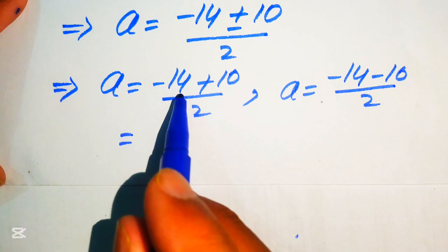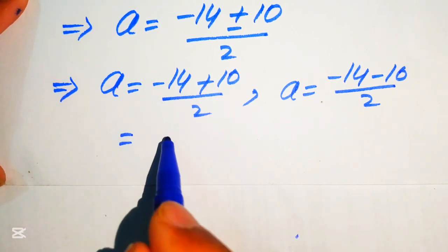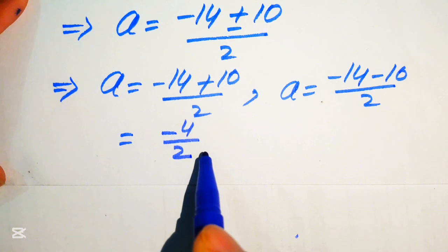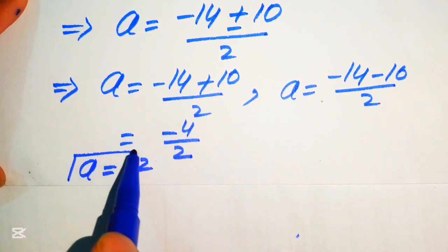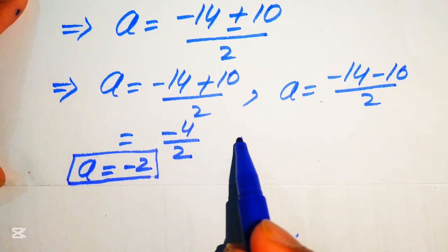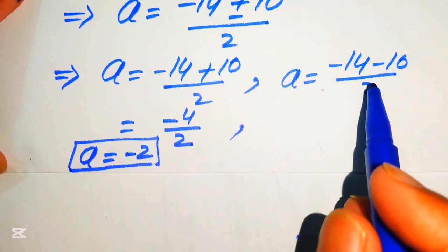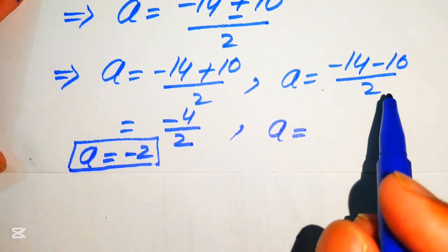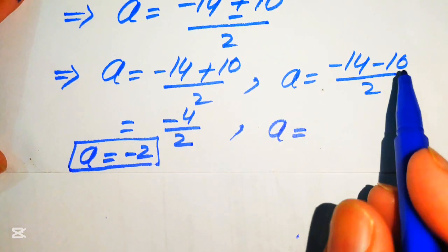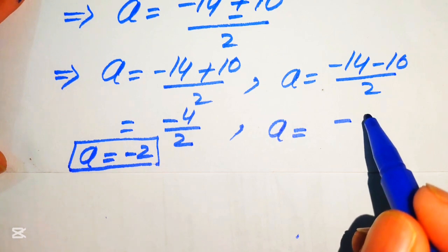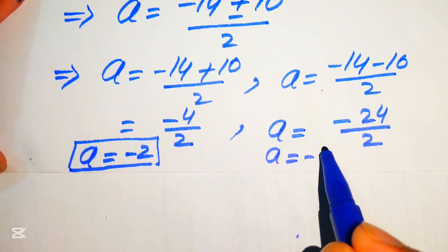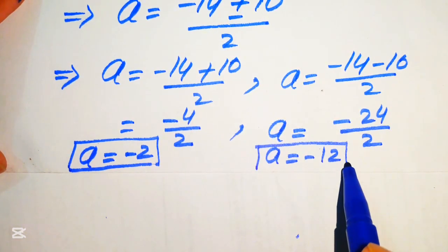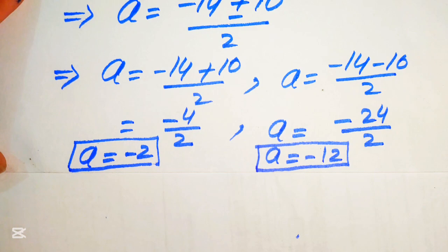From Case 1: (−14 + 10) / 2 = −4 / 2, so a = −2. From Case 2: (−14 − 10) / 2 = −24 / 2, so a = −12. These are the two solutions from Method 1.